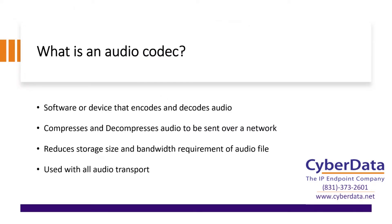An audio codec is a device or a bit of software that encodes and decodes audio. Going back to basics, audio is just sound waves. For that to be recorded and used in a digital or analog world, you need a device that can encode and decode it to transport sound information as data. The audio codec basically compresses and decompresses the audio so it can be sent over a network. For example, your car's AM and FM radio uses an audio codec — the audio is compressed as it's sent over radio waves, then decompressed by the codec in your radio.